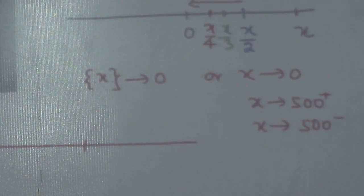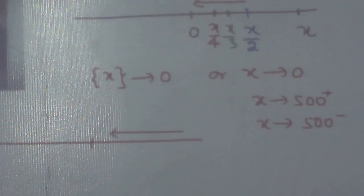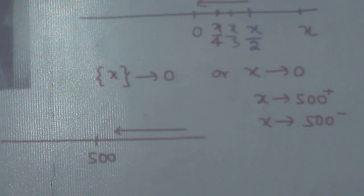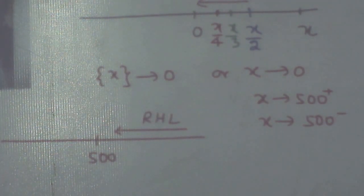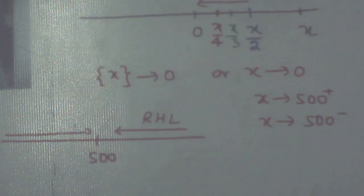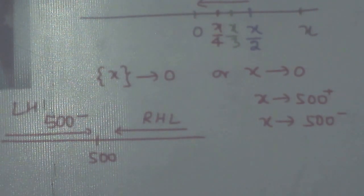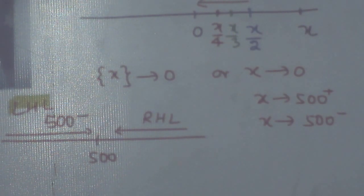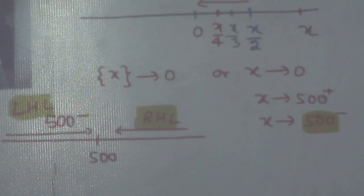This means one person has 500, another person has a little more than 500 — that is 500 plus — and the other person has a little less than 500 — that is 500 minus. If you are approaching from the right-hand side, it is called the right-hand limit. If you are approaching from the left-hand side — say from 100, 400, towards 500 — that is the left-hand limit. So one is left-hand limit and one is right-hand limit. Here 500 is the boundary, 500 is the limiting value.